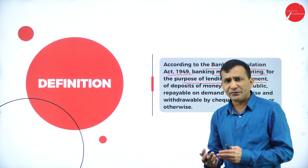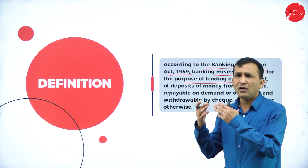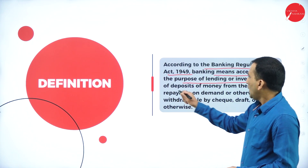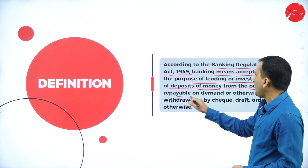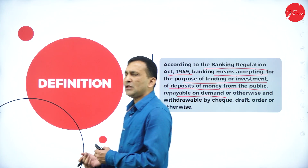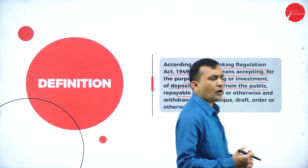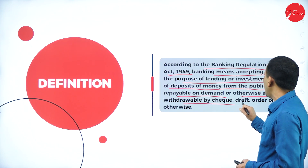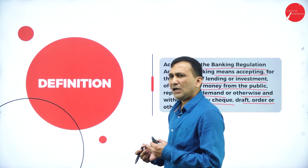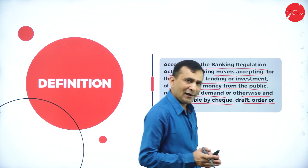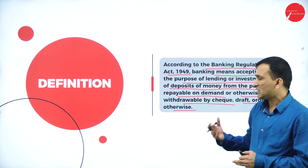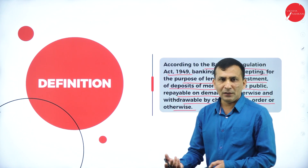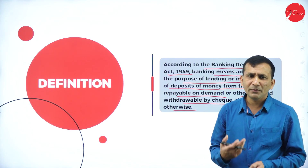Deposits of money from the public are repayable on demand — whenever customers want to withdraw money from the bank, there is always an option to do so. Withdrawals can be made by cheque, draft, order, or otherwise. There are different facilities provided to account holders: instead of cash they can use cheques or demand drafts, and other facilities include ATM, internet banking, and mobile banking — a lot of facilities are provided in modern banking.